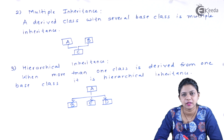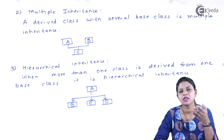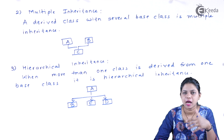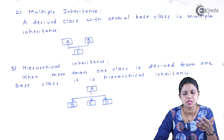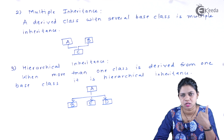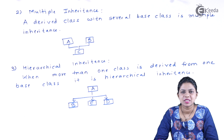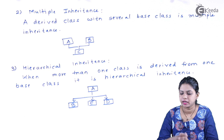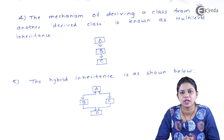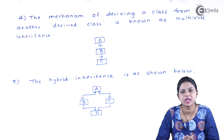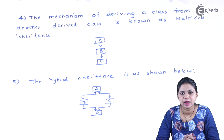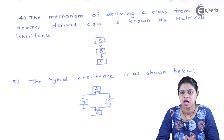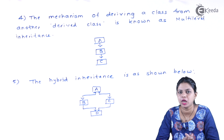The next is called hierarchical inheritance. Hierarchical inheritance is just the opposite of multiple inheritance. In hierarchical inheritance, there will be only one base class and multiple derived classes — a base class with several derived classes is called hierarchical inheritance. Then there is multi-level inheritance, where we create a derived class from an already existing derived class.